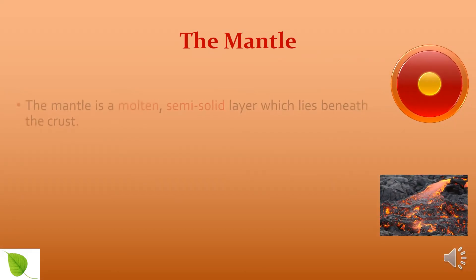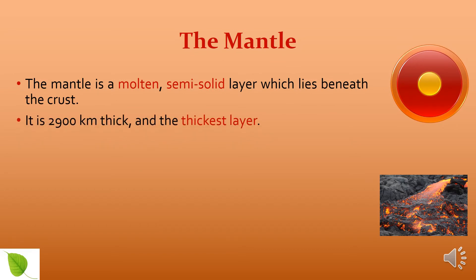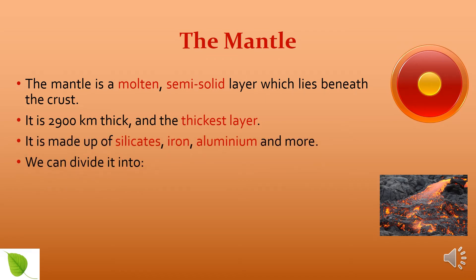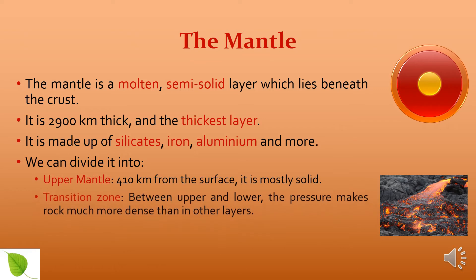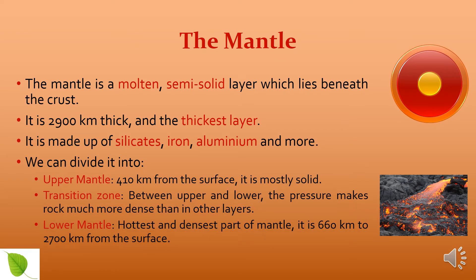The mantle is a molten semi-solid layer which lies beneath the crust. It is 2,900 km thick and the thickest layer. It is made up of silicates, iron, aluminium and more. We can divide it into the upper, lower and transition zone.